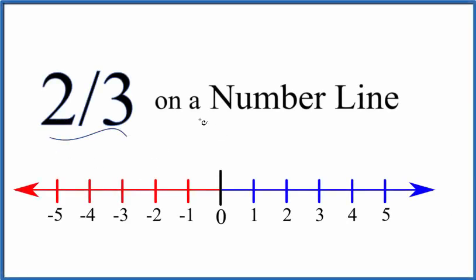Let's find two-thirds on a number line. We have our number line here. The red represents all negative numbers, the blue represents the positive numbers, and zero is right there in the center.